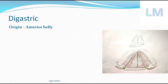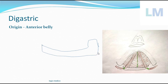The anterior belly takes origin from the inner surface of the chin, or the mandible area. This area has a depression. This is the side profile of the mandible — here is the mylohyoid line, and below it there is a depression caused by this muscle. Therefore, we call it the digastric fossa. That is also the origin.